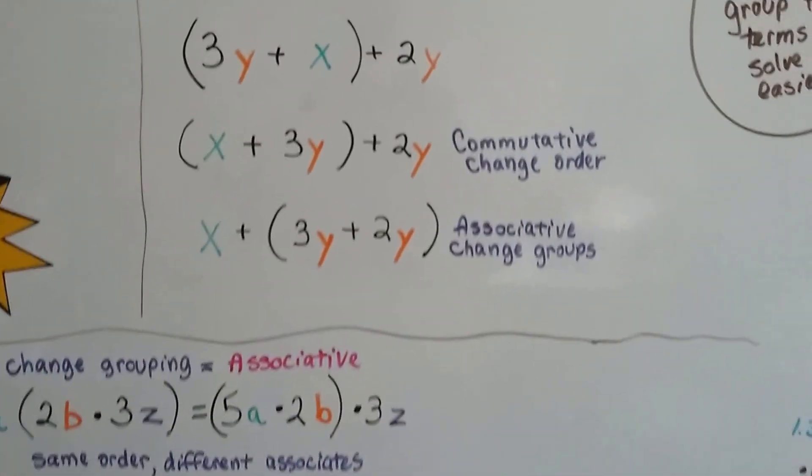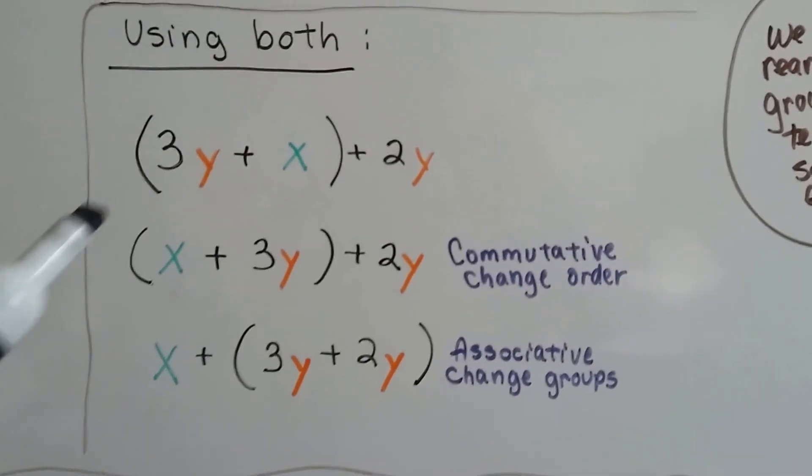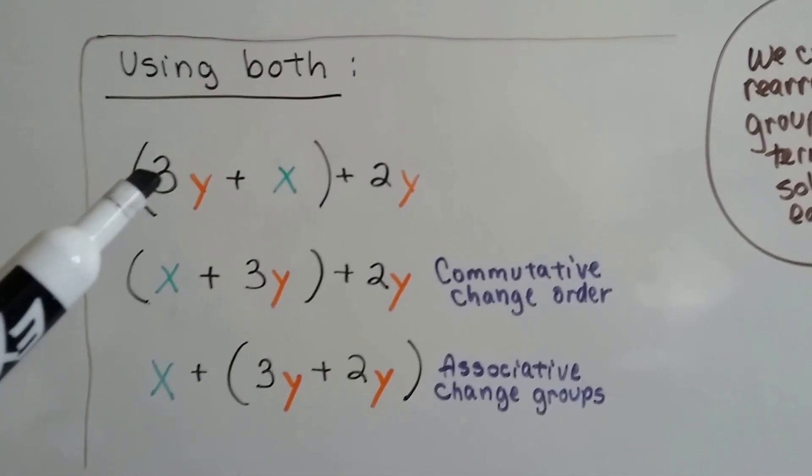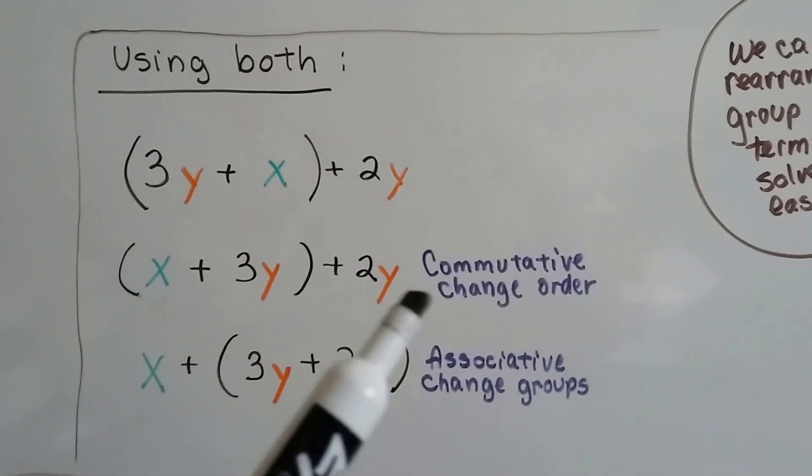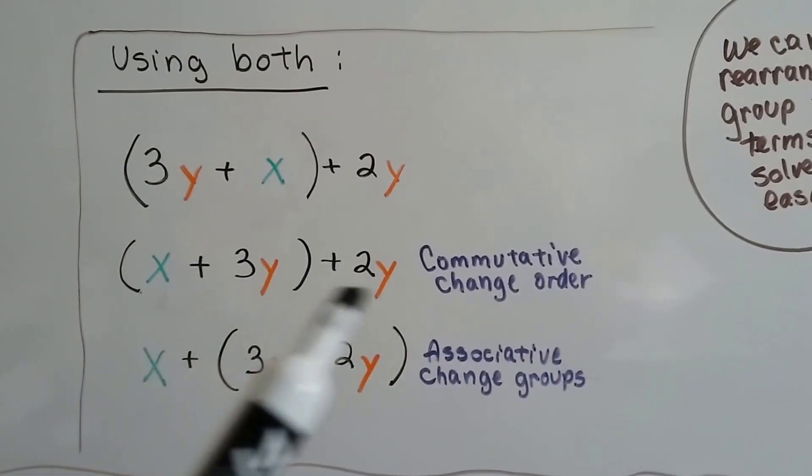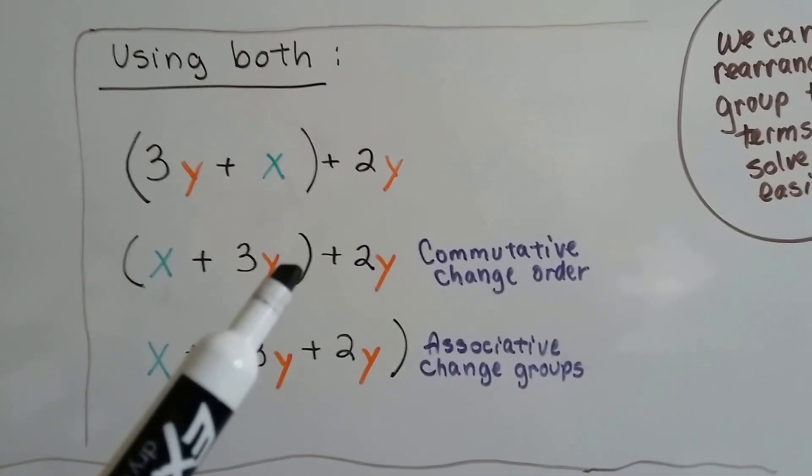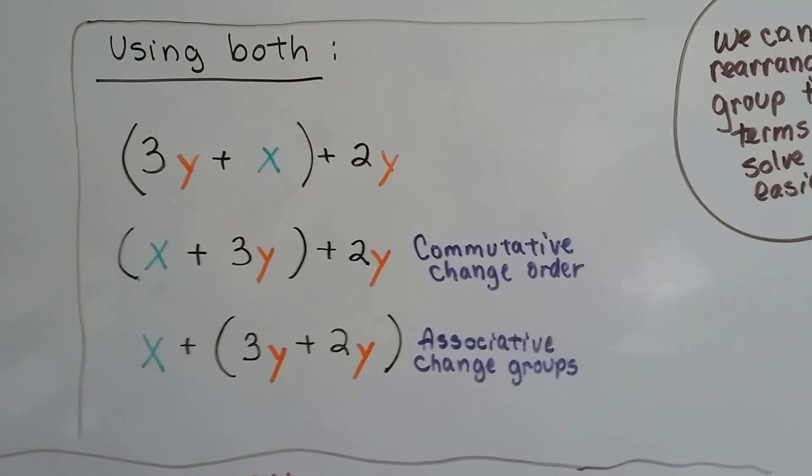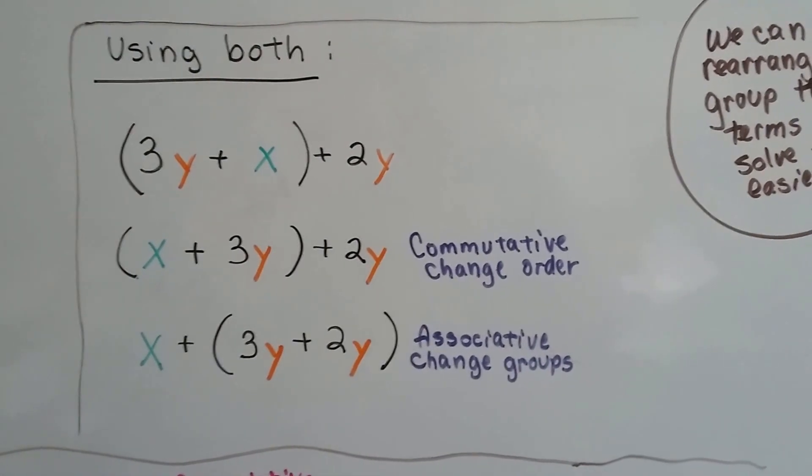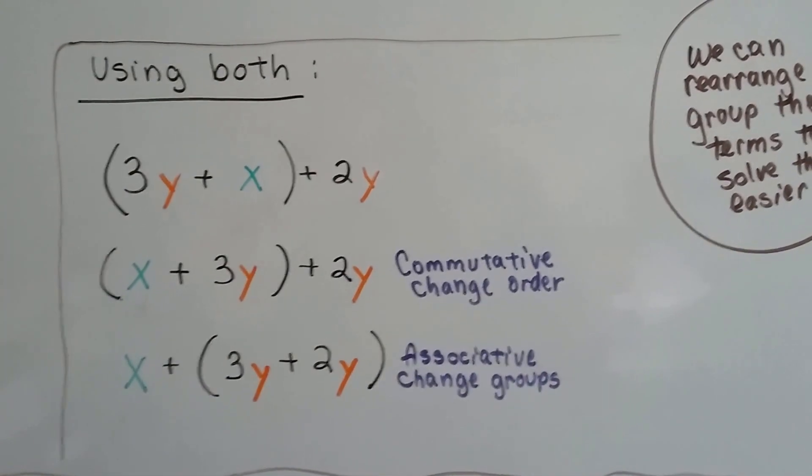Now we can use both to help us solve an algebraic expression or equation. When you see it written like this with the 3Y way over here and the 2Y way over here, we can change their order with the commutative property and get these Y values closer together. And then we can group them with the associative property.